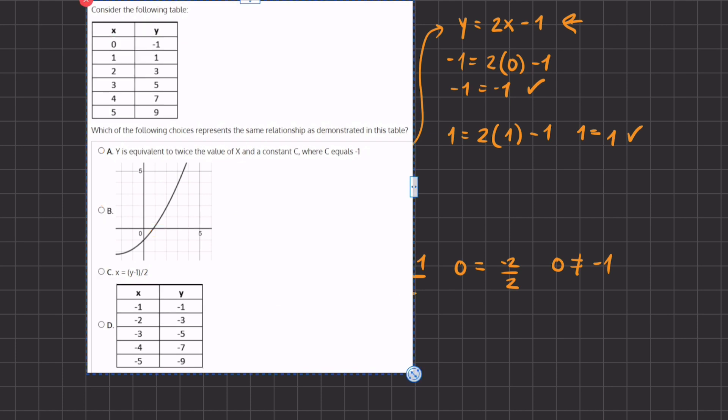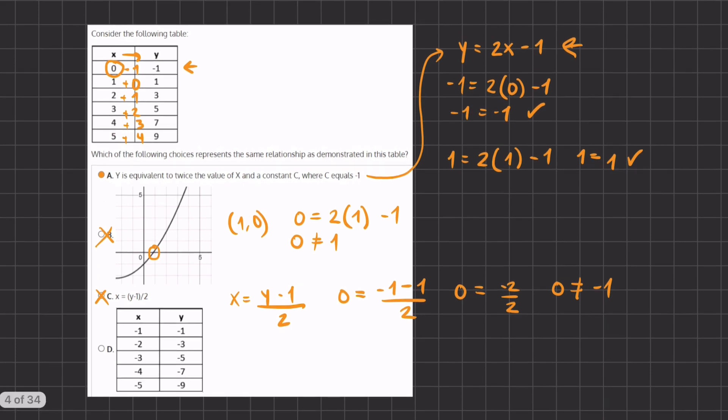we would expect to continue subtracting -2, then -3, -4, -5, and -6. As you can tell, this pattern does not continue for this graph, therefore D is also eliminated and A will be our final answer.